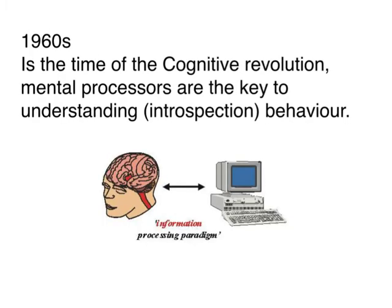In the 1960s came the cognitive revolution in psychology. Here we view the mind as a processor: the input is the environment — things we experience — and our internal computer processes this information. These processes are determined by our experiences and determine how we interpret things. For example, walking down the street somebody ignores you — how I process that might be different from how you process it, based on our different internal makeup.